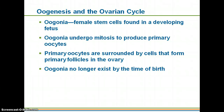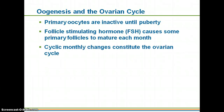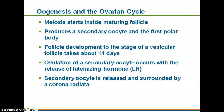By the time you're born, you don't have any more oogonia or female stem cells — you'll only have those primary oocytes. They are inactive until puberty. One of the things that triggers them to start maturing each month is follicle-stimulating hormone, which is released by your anterior pituitary gland. You have a cyclic monthly change in your hormones, and this constitutes the ovarian cycle. Basically, meiosis starts inside a maturing follicle — you start with a primary oocyte, which will be turned into a secondary oocyte and a first polar body.